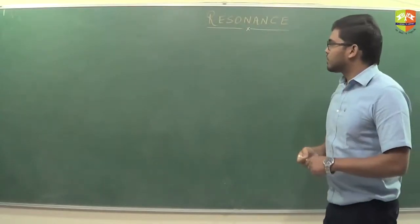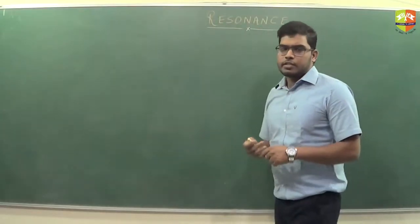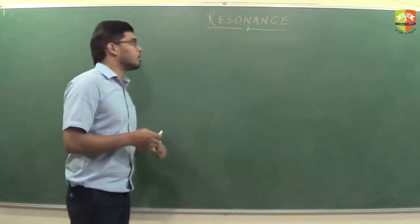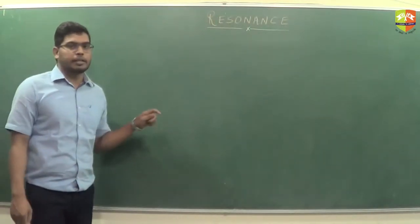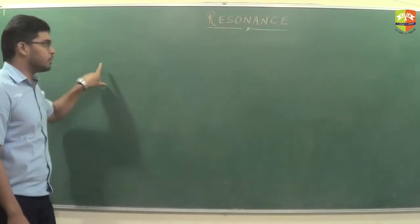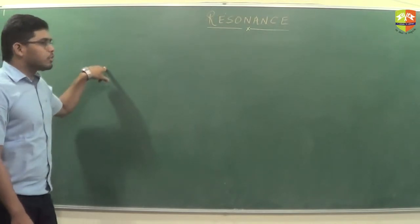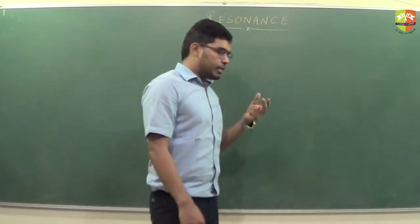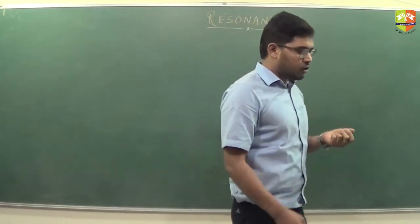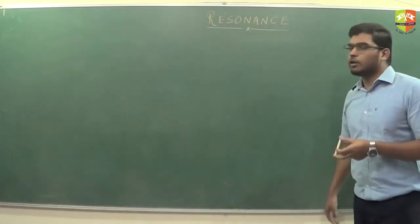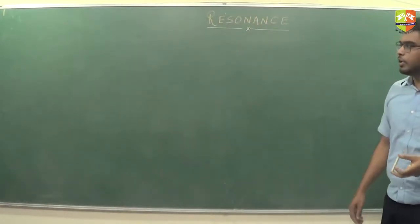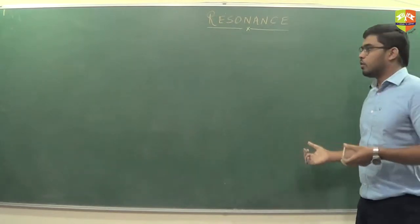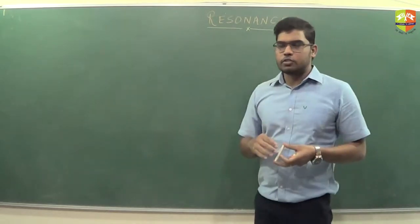So far we have discussed about resonance and the different conjugated systems where resonance is possible. We have also discussed about the contributors, and we said that there are two types of contributors: major contributors and minor contributors. Now we are going to discuss about these contributors and the stability of these contributors.